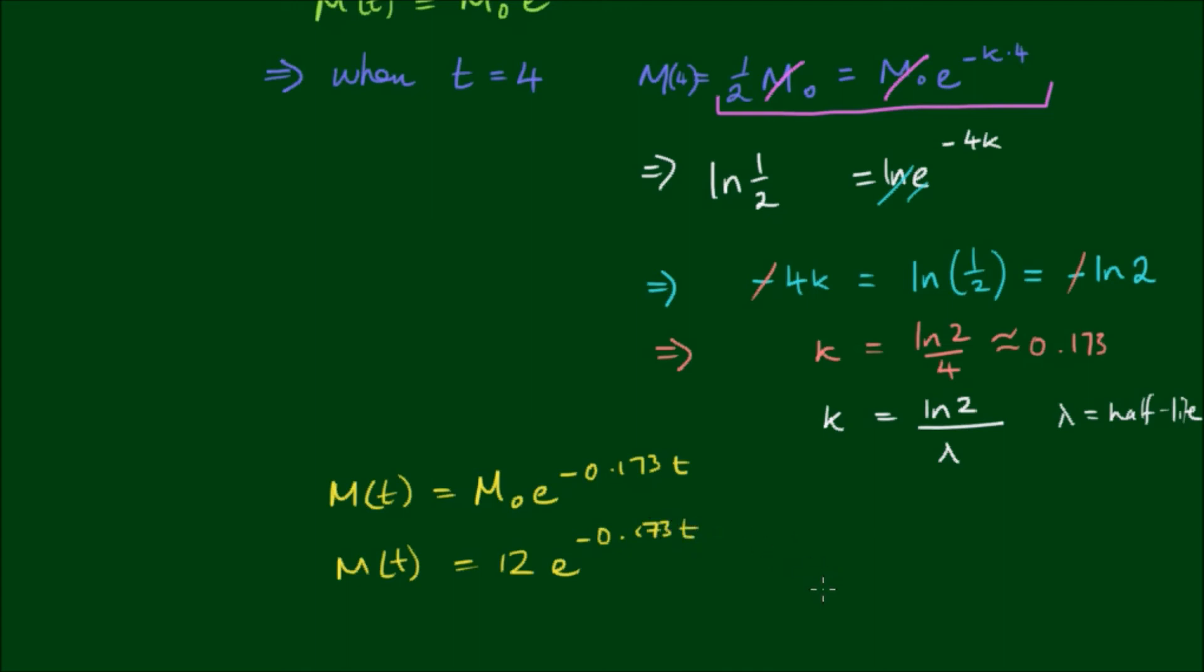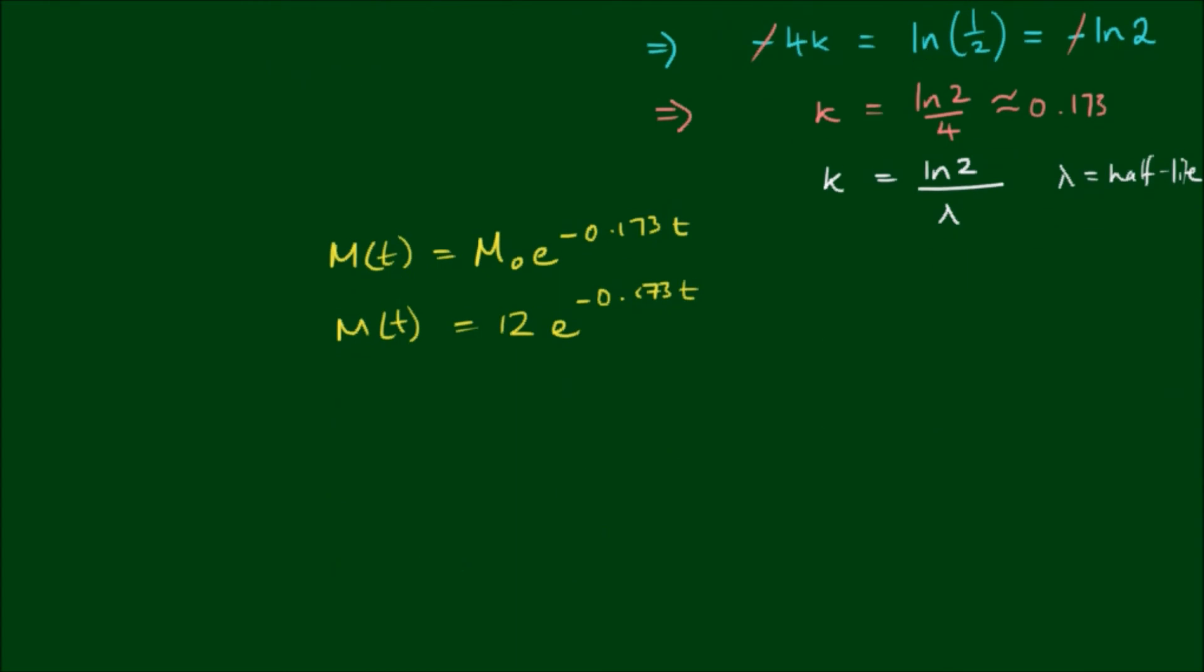So we're asked the amount that's remaining at 4pm. So we started with 12 at 10am. So from 10am till 4pm, well that's equal to 6 hours. So what's the mass remaining at 6 hours? So we've got M equals 12e^(-0.173×6). And that's equal to about 4.24 milligrams.